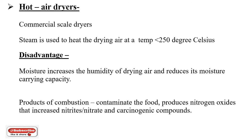Number one: hot air dryers. This is a commercial-scale dryer where steam is used to heat the drying air at a temperature less than 250 degrees Celsius. Some disadvantages of hot air dryers are: moisture increases the humidity of the drying air and reduces its moisture-carrying capacity; and the products of combustion contaminate the food, producing nitrogen oxides that increase nitrates and nitrites, and some carcinogenic compounds which are harmful.